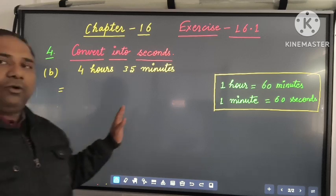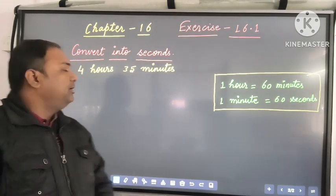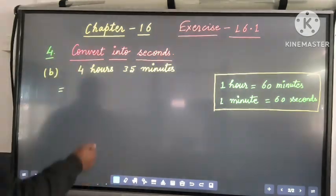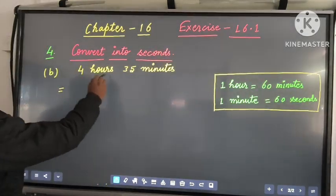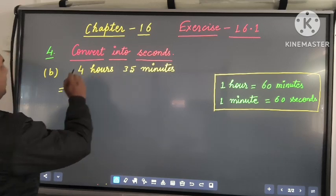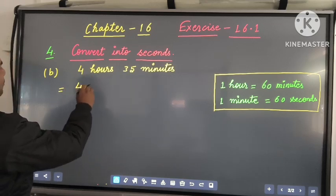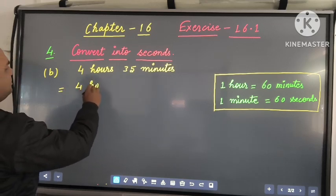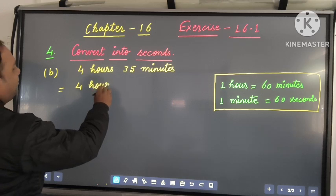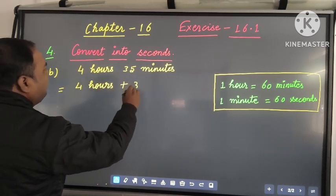Now see Question number 4b. 4b is 4 hours 35 minutes. Again we will write down 4 hours plus 35 minutes.